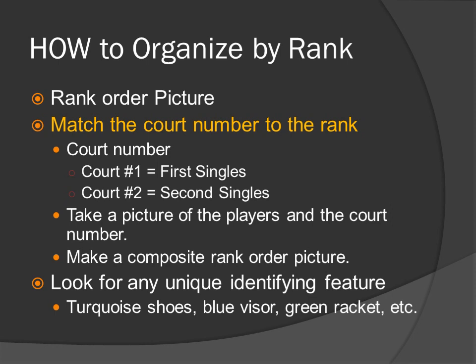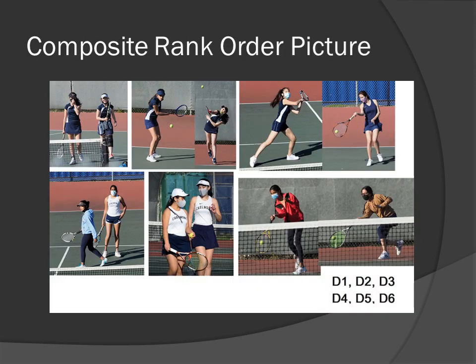Make a composite rank order picture. If you cannot get the rank order picture, an option is a composite rank order picture, like this one. It has doubles one, two, three, four, five, and six. Ideally, you want pictures like in the top left and bottom left, where you have both players in a single picture. In cases like the top middle, I did not have a single picture with both of them, so I had to make a composite with the two individuals put into one. Same thing for third doubles and sixth doubles — I had to make a composite of both individual players into one final picture.